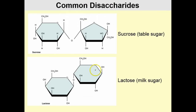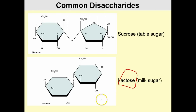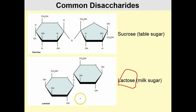Here's another common disaccharide: lactose, which is milk sugar. If you hear somebody say they are lactose intolerant, that means they don't do a very good job at digesting this disaccharide sugar.